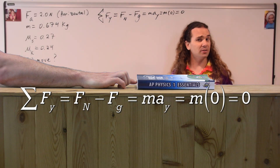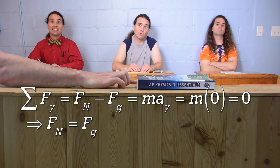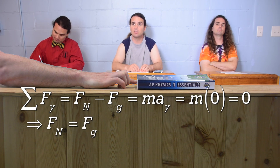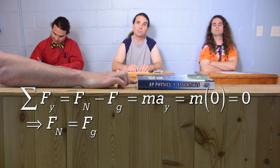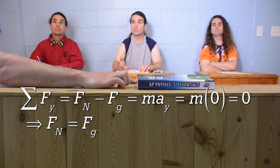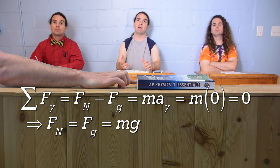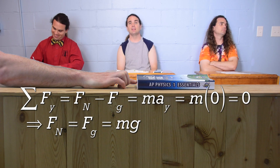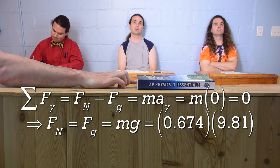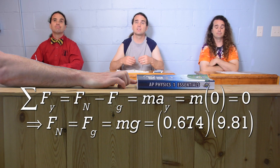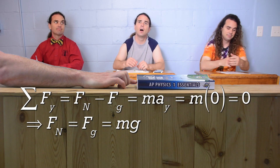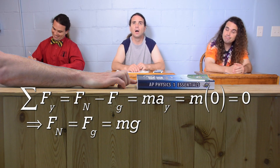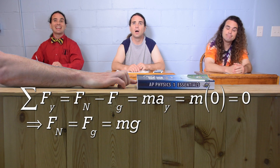Bobby, please continue. Then we can add the force of gravity to both sides to give us the force normal equals the force of gravity. And the equation for the force of gravity is mass times the acceleration due to gravity. We know the mass of the book and the acceleration due to gravity, so we can plug in numbers. Instead, let's put the equation into our equation holster.